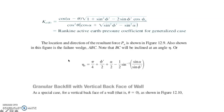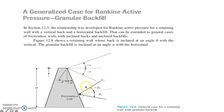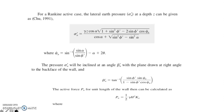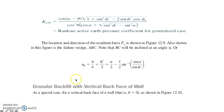The location and direction of the resultant P sub A are shown in the figure. It is also shown that the failure wedge is ABC, where BC is inclined at an angle eta, and eta can be computed using its given equation. The angles alpha and theta are also indicated in this illustration.